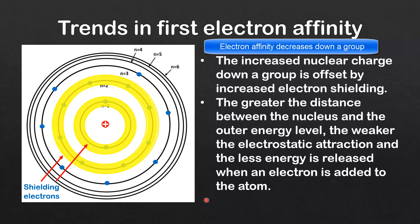So we've covered the trends in electronegativity and first electron affinity in the periodic table. Don't forget — check the video description for a link to a practice worksheet which covers the main points of the video.